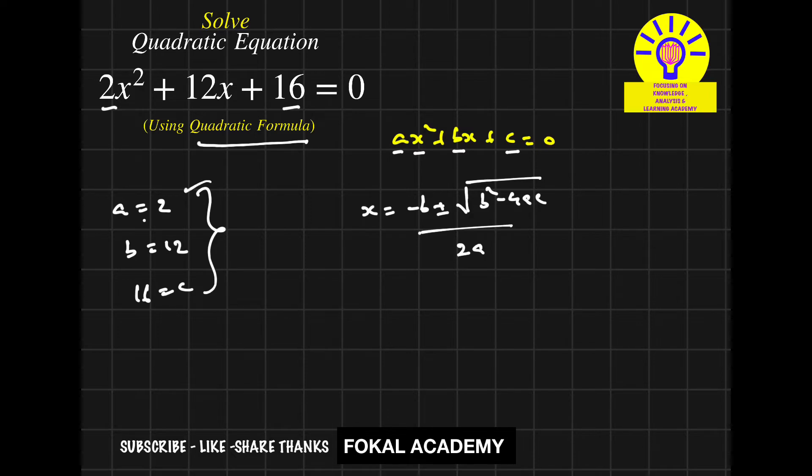Now substitute the a, b, and c values in this equation. So x = (-12 ± √(144 - 4·2·16))/4. That's -12 ± √(144 - 128) divided by 4.